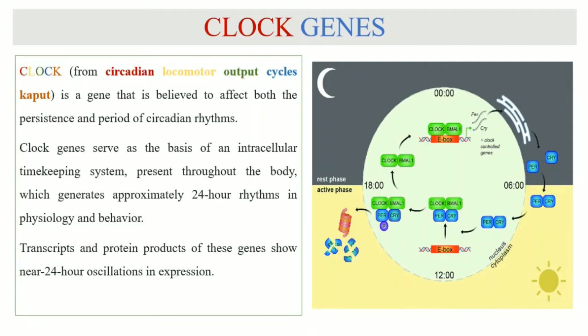In this figure you can see the two phases that occur in a 24 hour period: the active phase and the rest phase. Rest phase is during the night and during this phase the transcription factors known as CLOCK and BMAL1 bind to the E-box.